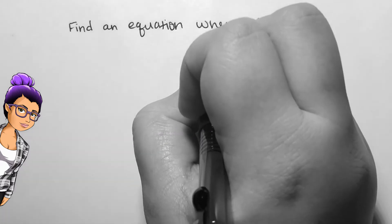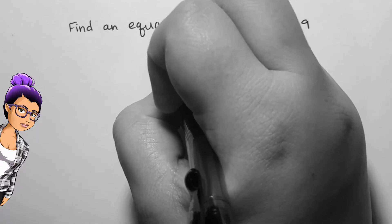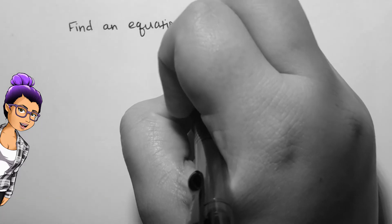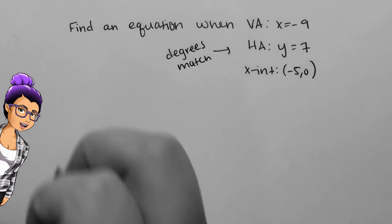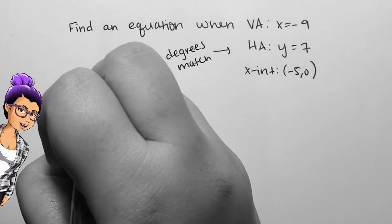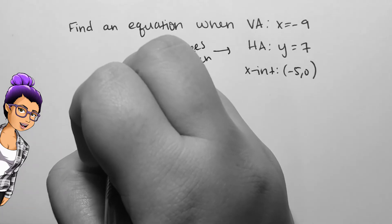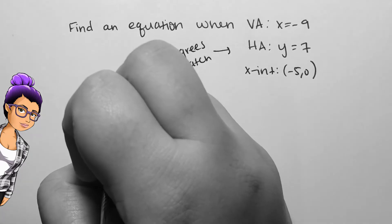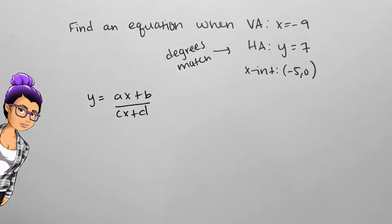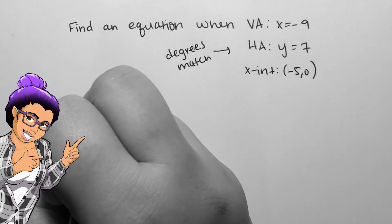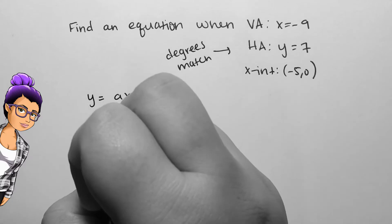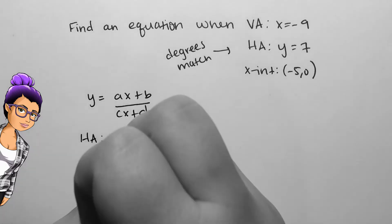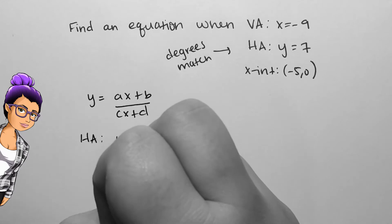The horizontal asymptote is a number beside 0, so the degree in the numerator and denominator must be the same. Since there's a single horizontal asymptote and x-intercept listed, we can make sure there's only one factor in the numerator and denominator, so as not to complicate things. Note that there will be lots of different equations that satisfy these numbers, so if you want to complicate things further, go for it — make it fun! But on the basic side of things, let's say our solution will be of the form ax plus b over cx plus d.